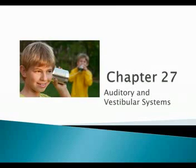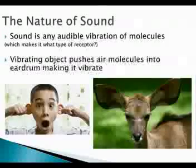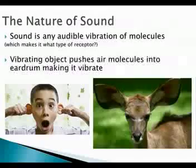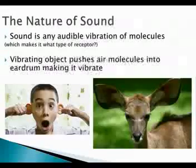Chapter 27 is split up into two parts: auditory and the vestibular system. We're going to start with the auditory. Before we get into the specific details of the structures within the hearing system, we're just going to talk a little bit about what sound is. Sound is any audible vibration of molecules — the actual movement of molecules from the environment through the cochlea, which is the hearing organ, and then into its transduction to the brain.